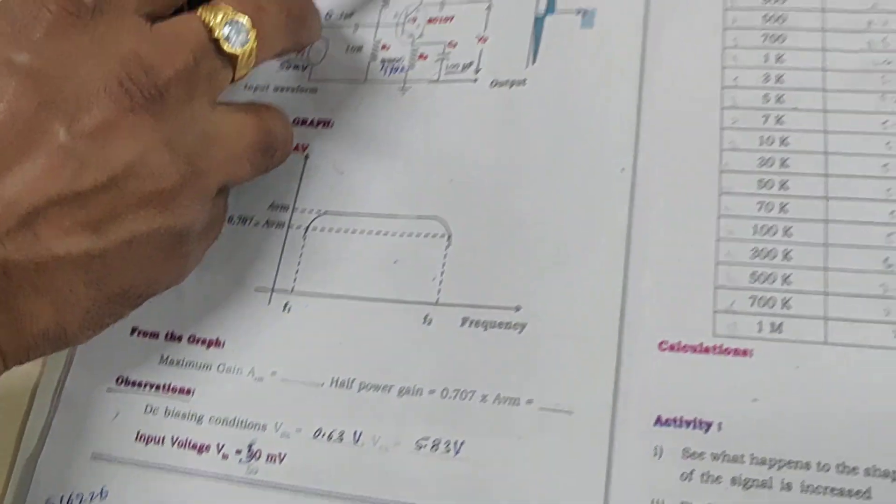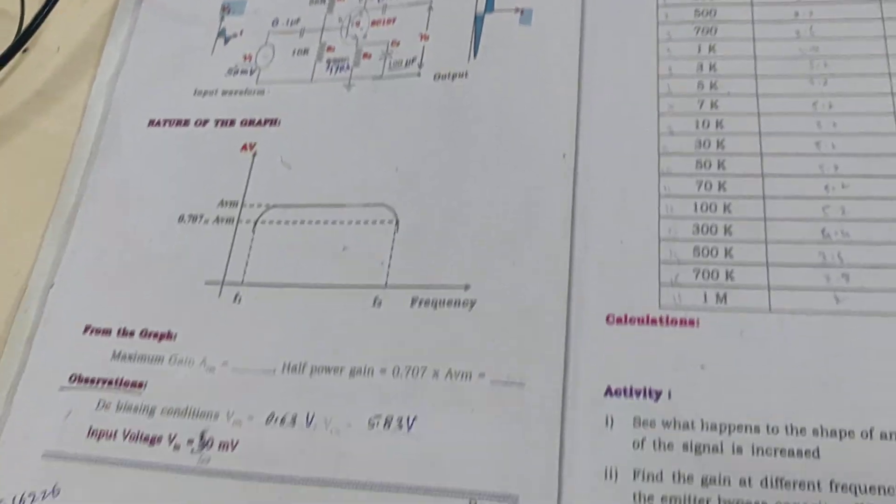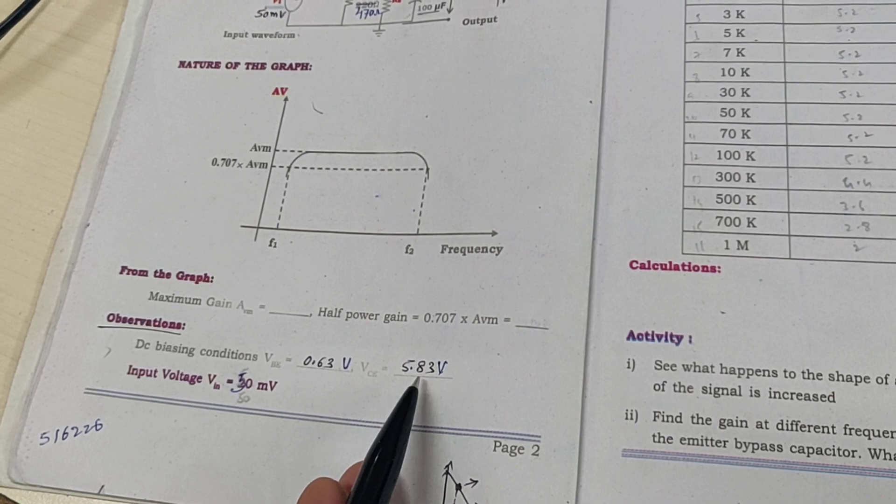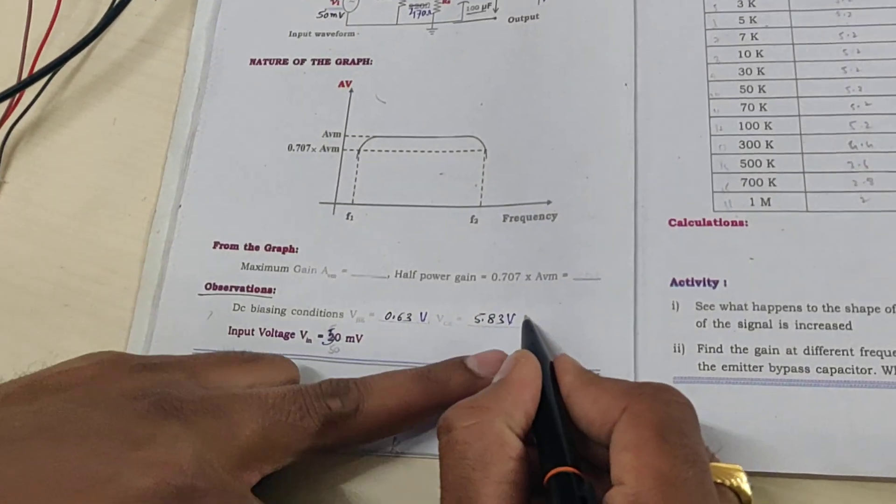I told you half of 12 volts we should get here. We are getting nearly 6 volts, since 5.83 is near to 6 volts. The biasing is perfect.